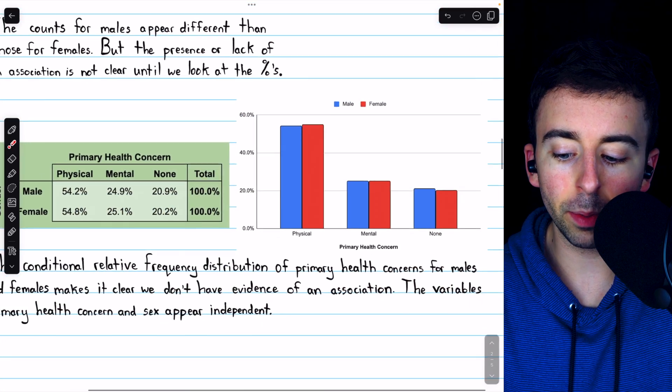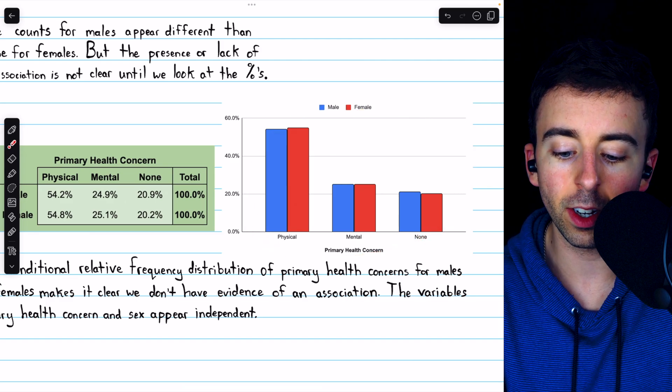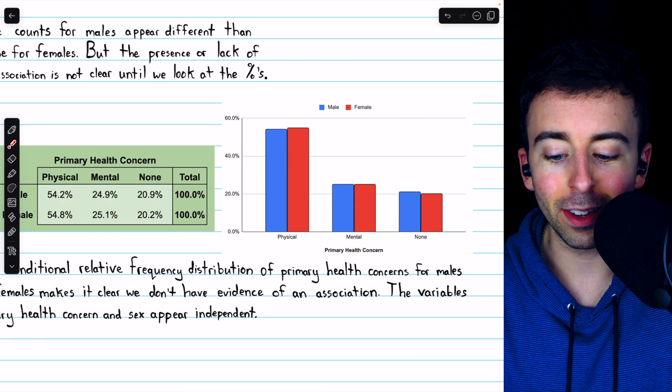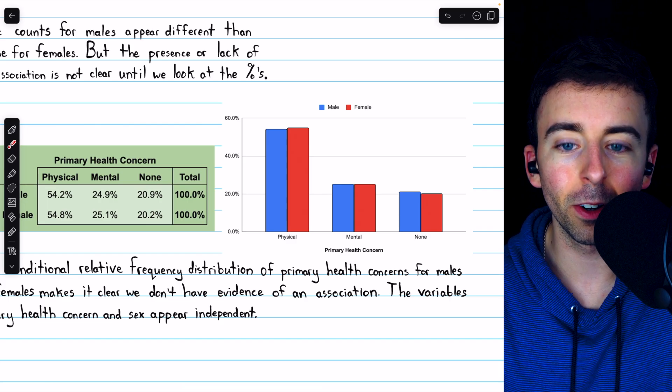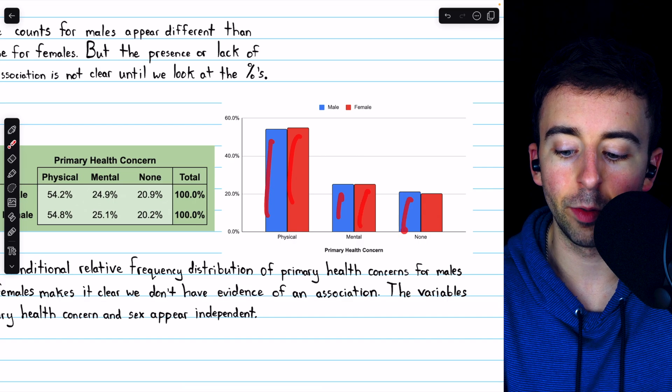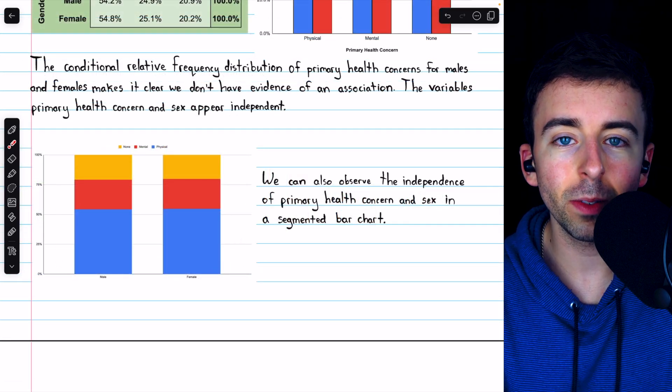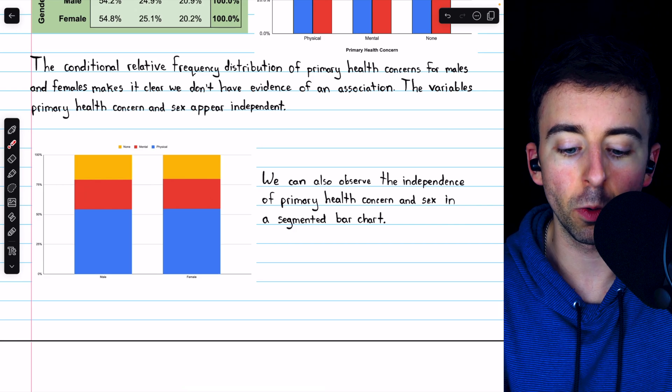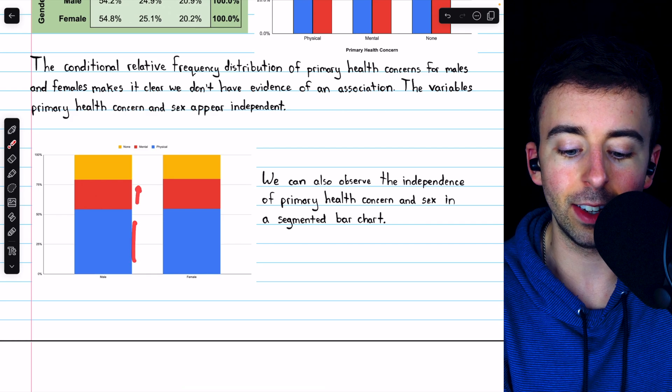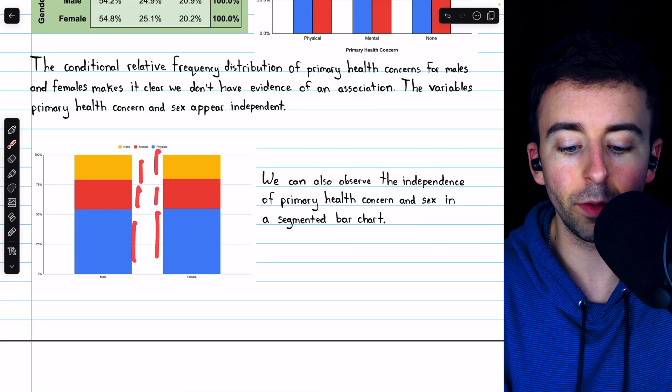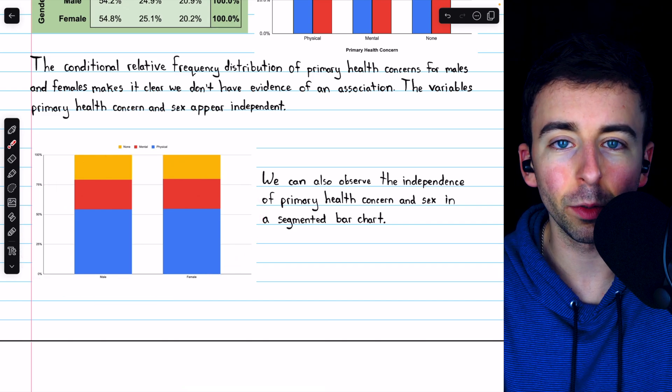Just as with the Titanic example, we might want to construct a side-by-side bar chart for this situation, again using relative frequencies, and this makes it very clear at a glance that the distributions of primary health concerns appear the same for males and females. We can also use a segmented bar chart for this situation. I'll leave a link in the description to my video introducing this type of chart if you're not familiar with it, but this also gives us an easy way to see that the distributions for males and females appear the same. This is basically like a pie chart, but in rectangle form.